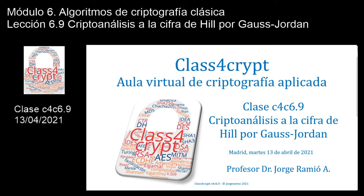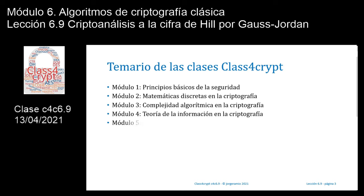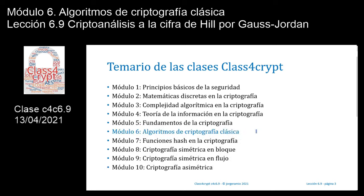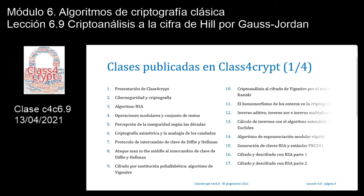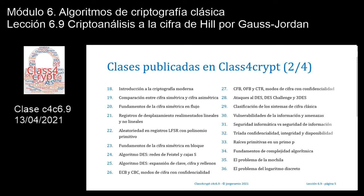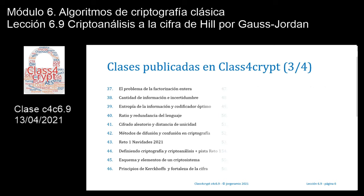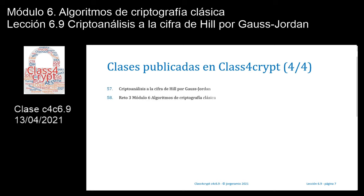Bienvenidos a Class for Crypt, tu aula virtual de criptografía aplicada. Clase número 6.9: Criptoanálisis a la cifra de Hill por Gauss-Jordan. Esta clase pertenece al módulo 6 dedicado a los algoritmos de criptografía clásica. Las siguientes cuatro diapositivas muestran los títulos de las lecciones publicadas en este canal Class for Crypt, siendo la elección de hoy la número 57: Criptoanálisis a la cifra de Hill por Gauss-Jordan.